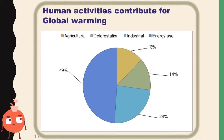This chart shows the different human activities that contribute to global warming. As you can notice, 49% comes from energy use, 24% from industrial activities, 14% from deforestation, and lastly 13% from agricultural activities. Global warming and climate change is happening today, and we must take action to alleviate its effect on the Earth.